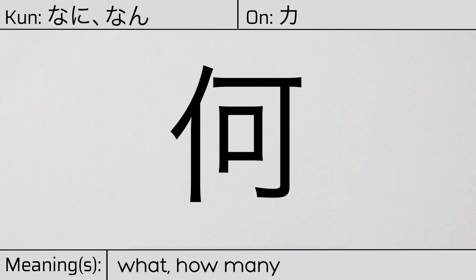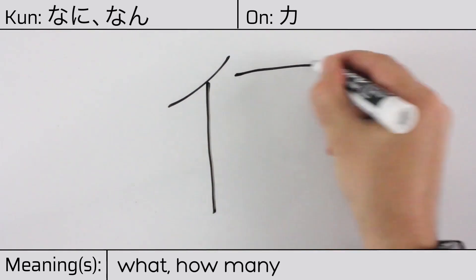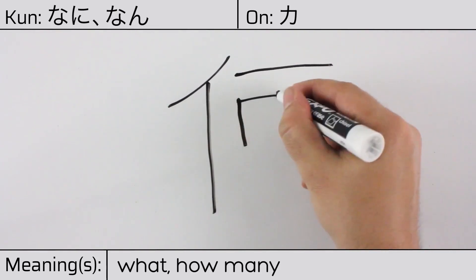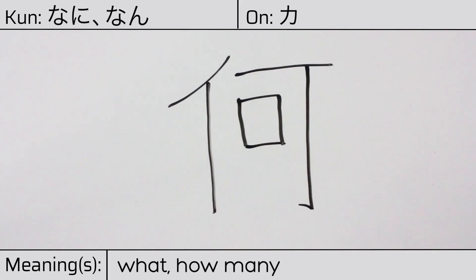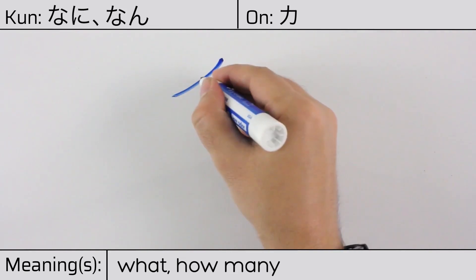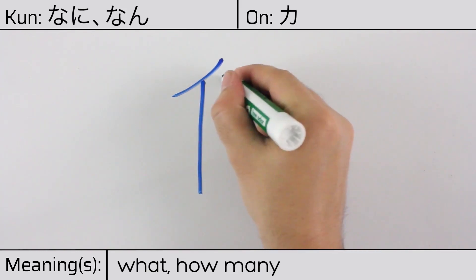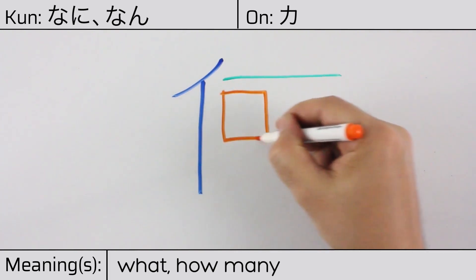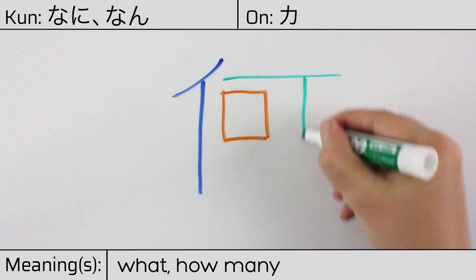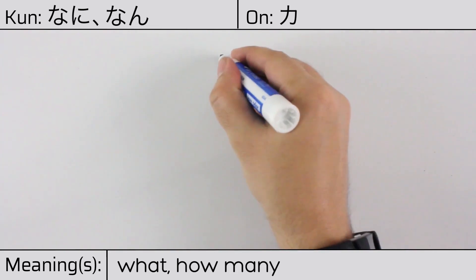Here is the stroke order. This character is made up of the following radicals or parts: The stylized person, or hito, known as ninben. Ichi, or wan, the mouth radical. And this sort of hook radical. The whole right side of this character means can, or passable.